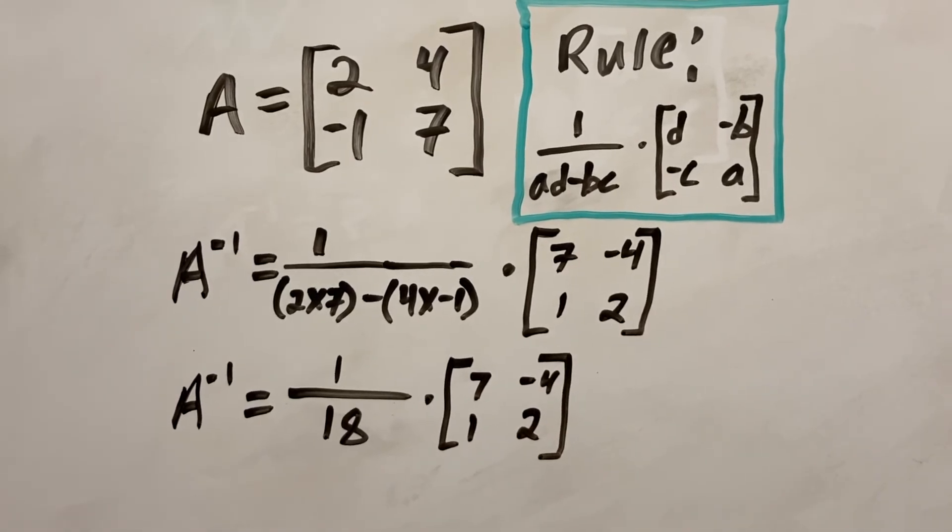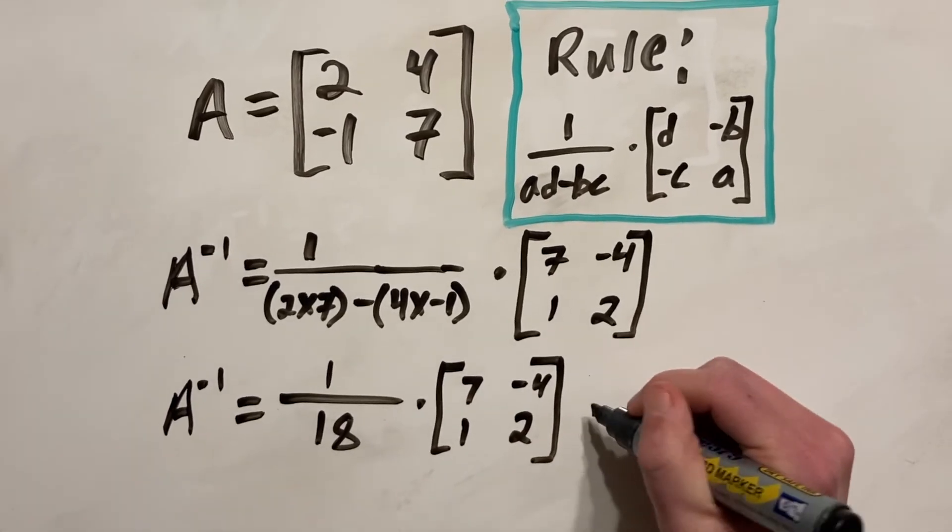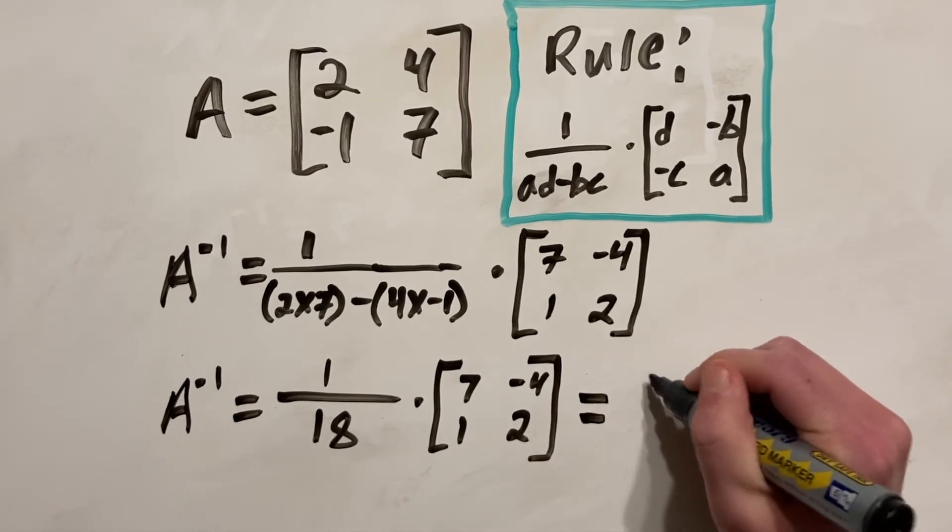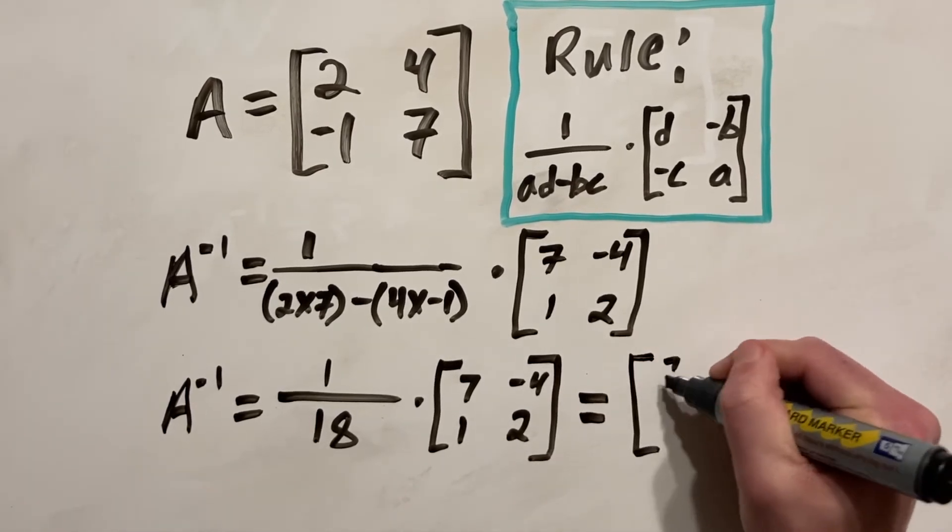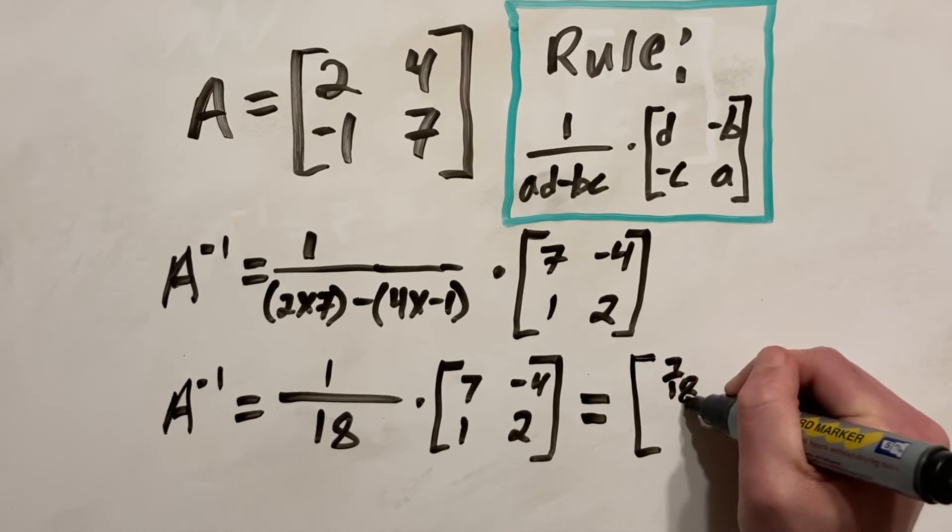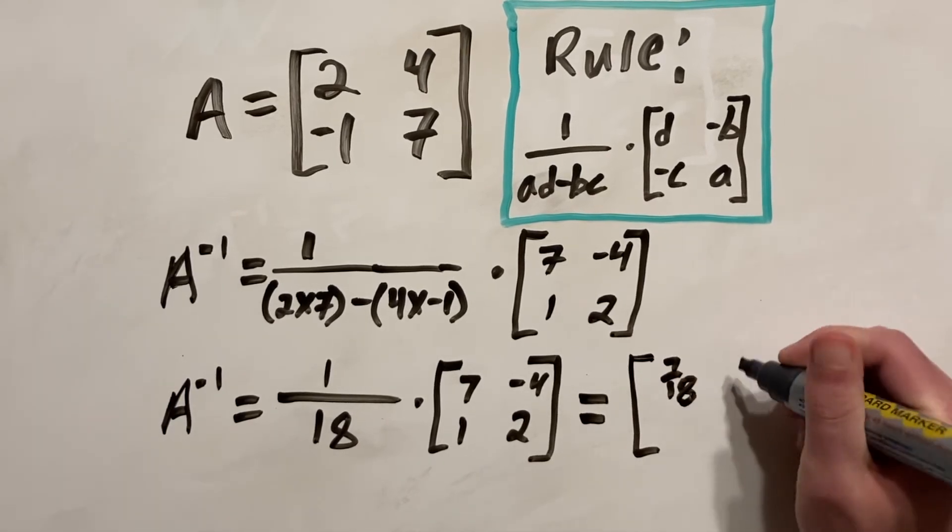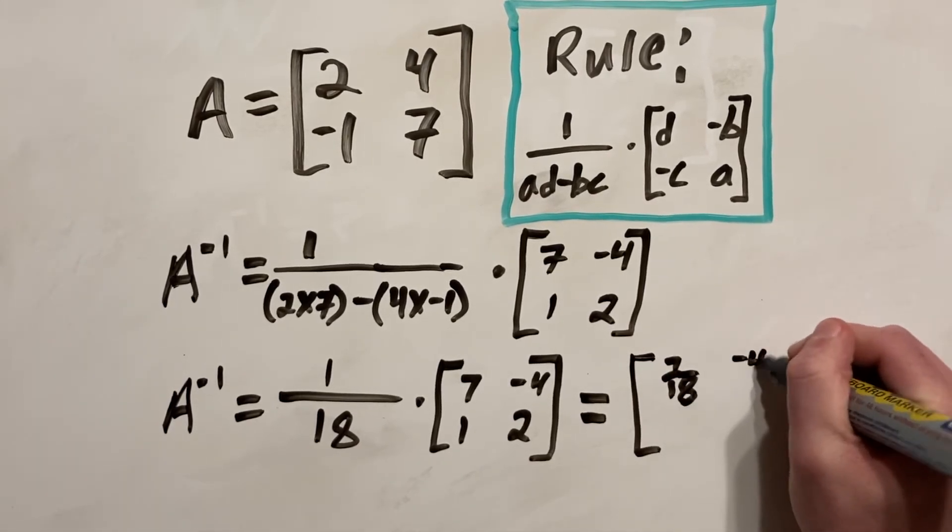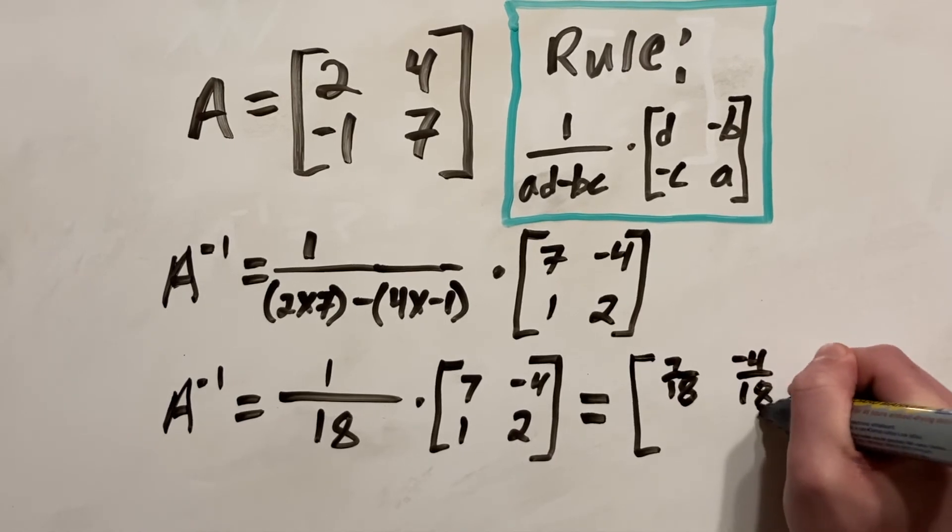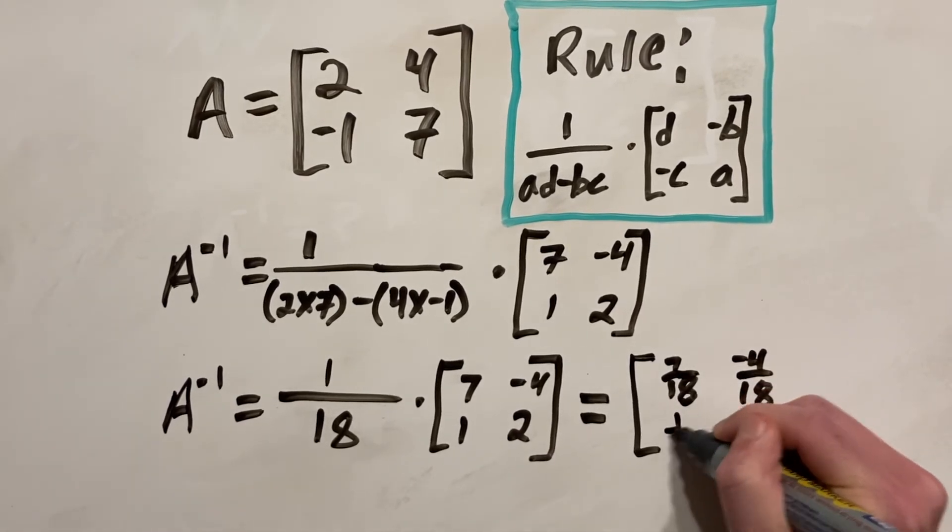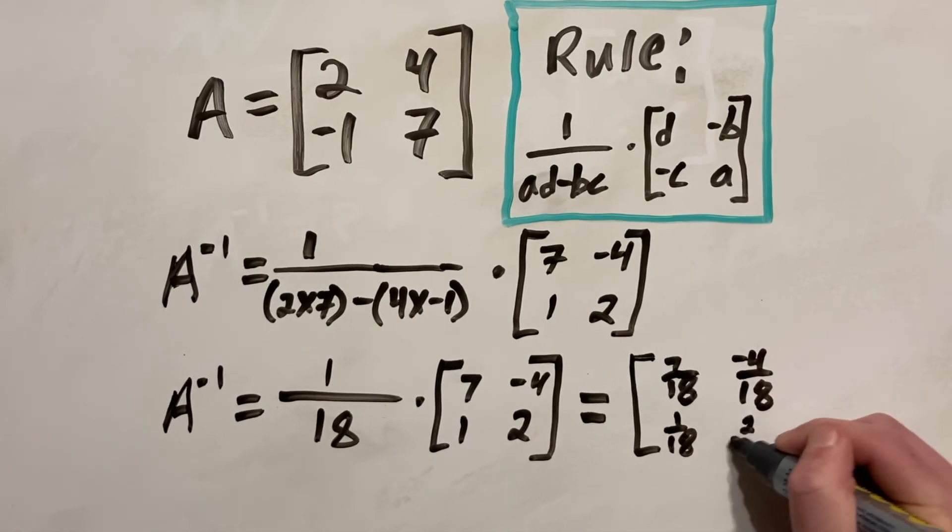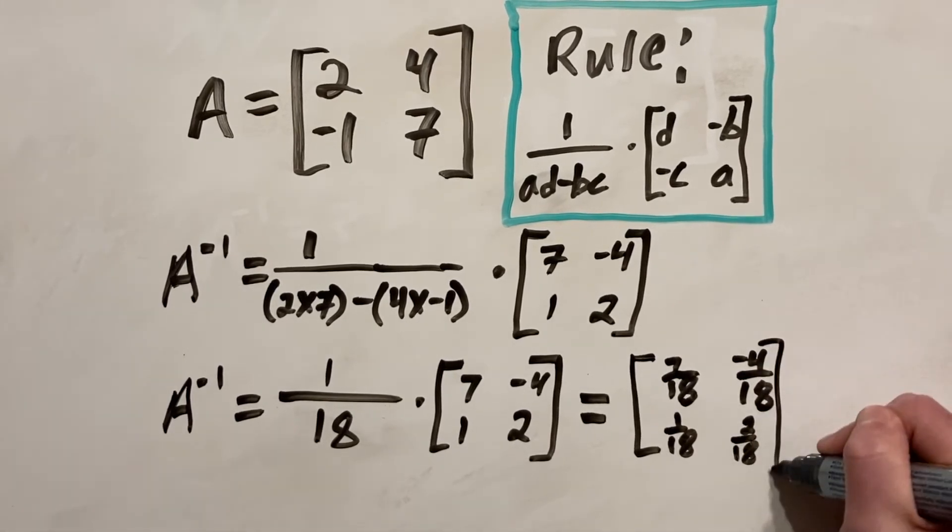And this is an okay answer, but usually you're going to want to multiply these together, so you get your inverse as 1 matrix. So if we do that, we get 1 over 18 times 7, which is just 7 over 18. And then 1 over 18 times negative 4, so that's negative 4 over 18. And if we continue, we get 1 over 18 and 2 over 18.